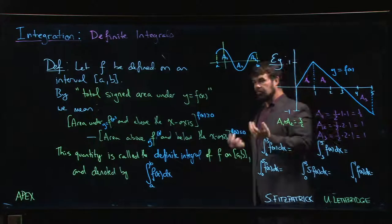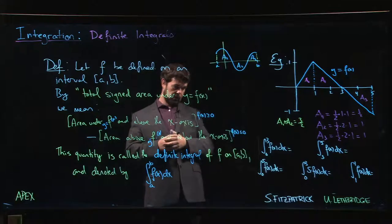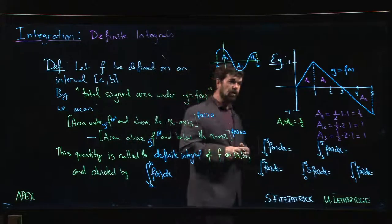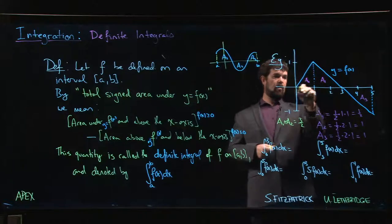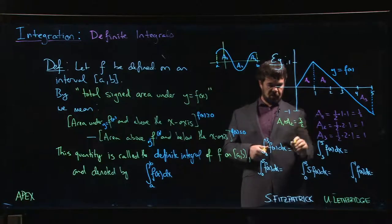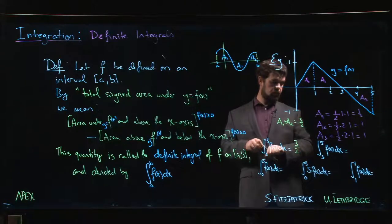So if we want to talk signed area, then we put this in terms of the integral. So the integral from 0 to 3, well, the integral from 0 to 3 is just the area of this big triangle here, and as we just said, that's 3 over 2.